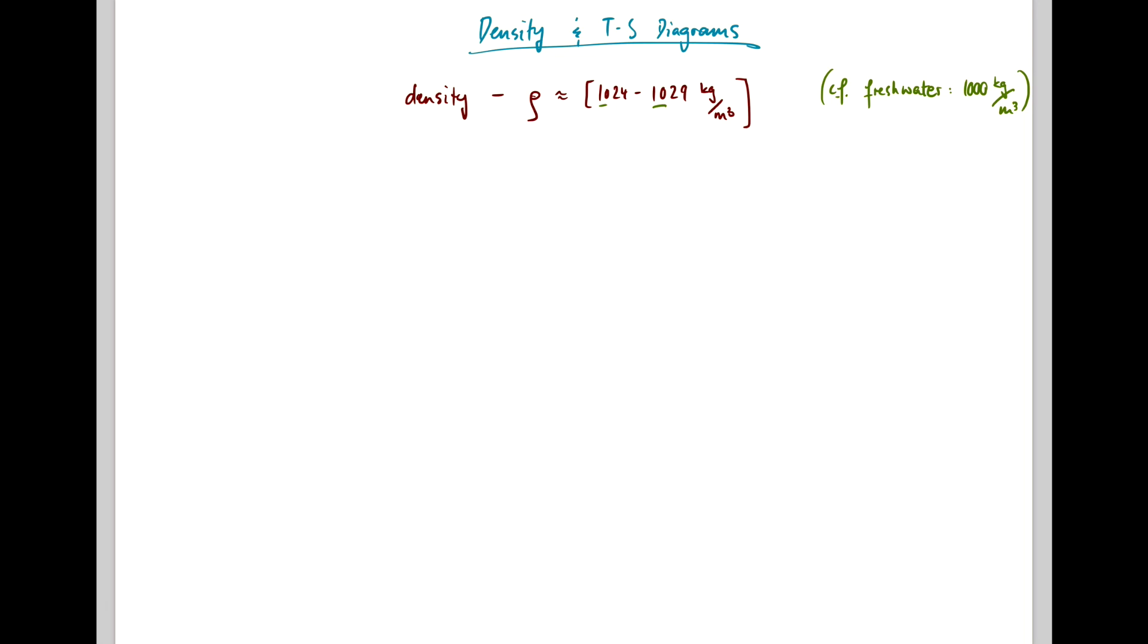fresh water is close to 1000 kilograms per meter cubed. Since the first two figures are always the 10, people define a value called sigma T, and that is rho as a function of salinity and temperature minus 1000. So that allows us to just talk about density without considering the 1, 0 in front.